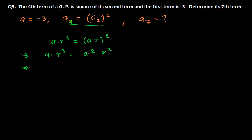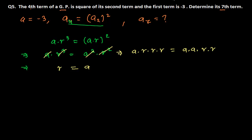Now let's cancel. On the right side there are two a's, and on the left only one, so canceling one a leaves one a on the left. There are two r's on the right and three on the left, so canceling two r's leaves one r. This gives r equals a, and since a equals minus 3, our common ratio r is also minus 3.